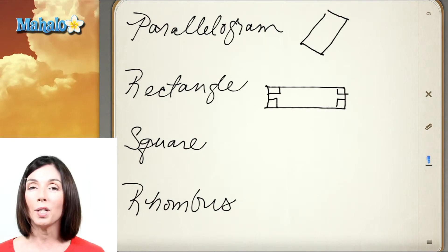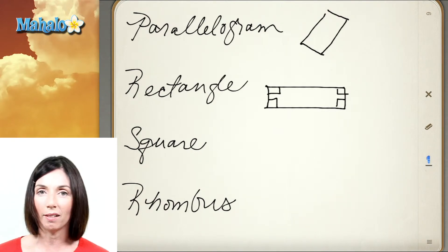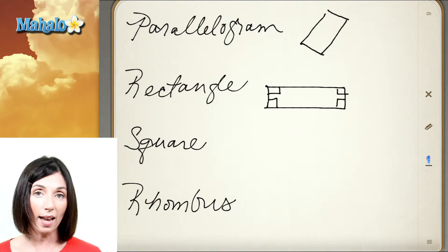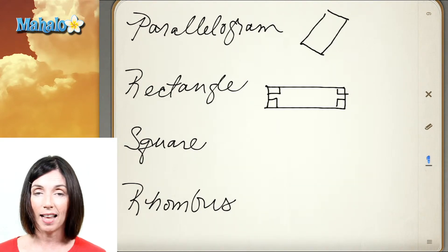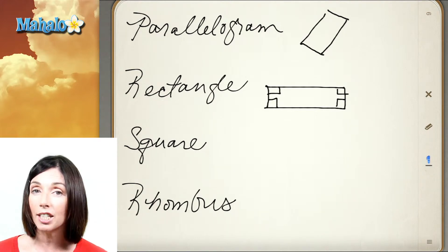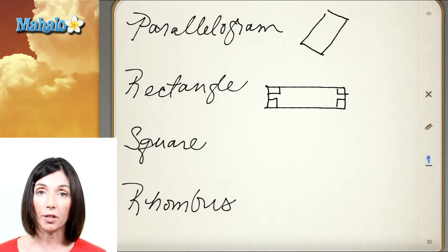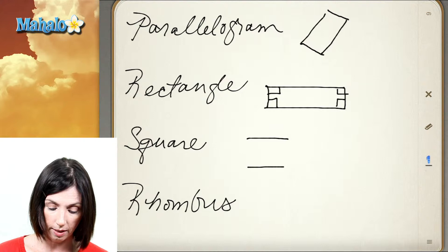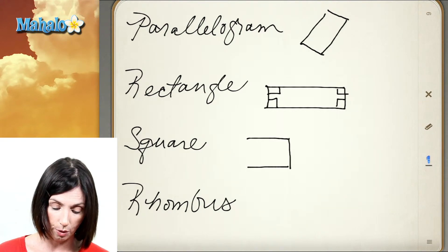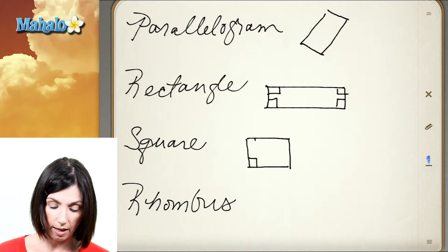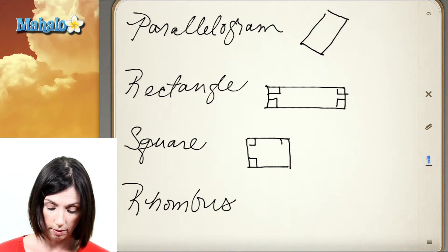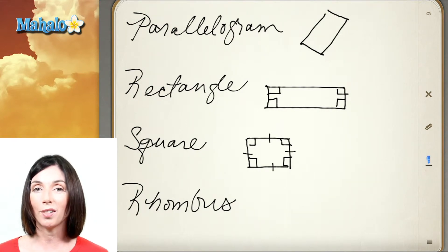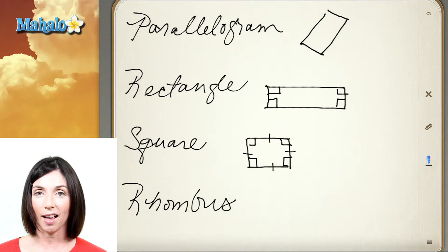A square also has two pairs of parallel sides and four right angles, but it has the additional condition that all of the side lengths measure the same. We would have a parallel line here and a parallel line here, and then another pair of parallel lines to complete the square. All of the interior angles are right angles and all the sides measure the same length. So a square is a quadrilateral with two pairs of parallel sides, four right angles, and all sides the same length.